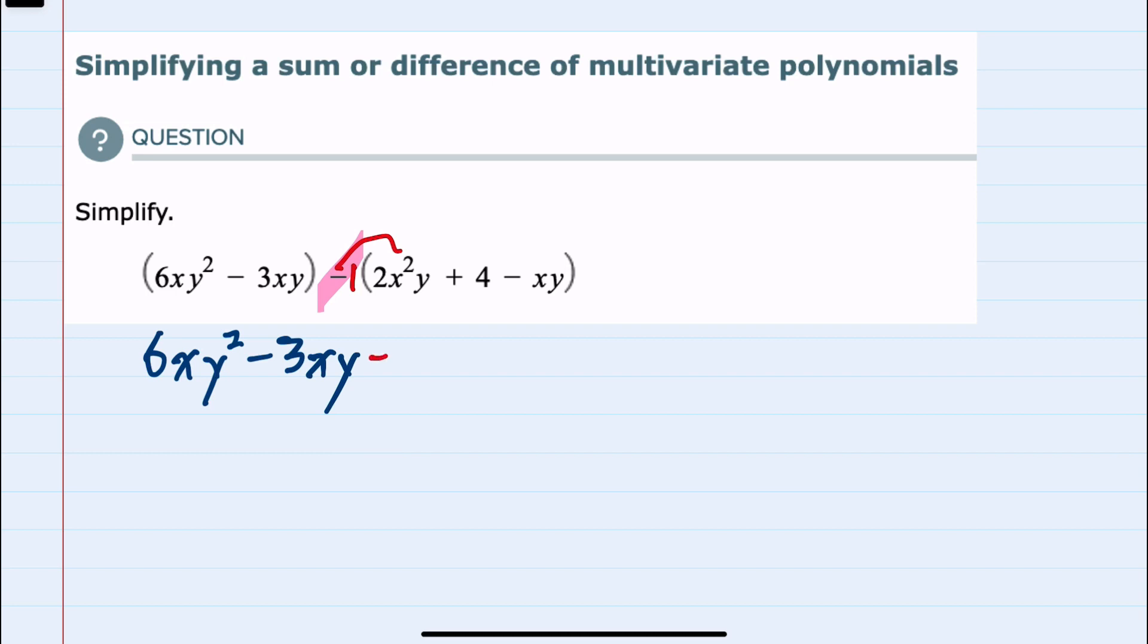So for the first term that would be a minus 2x²y, a minus 1 times 4, a minus 4, and then a minus 1 times negative xy would be a positive xy. So the end result is that each one of those signs has been changed by the negative outside the parentheses.